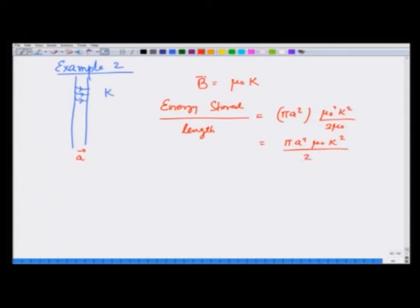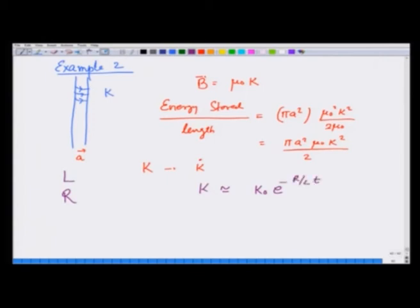Let us now switch off the current k at a rate k̇, so that it slowly goes to zero. If the solenoid has inductance L and resistance R, k decays as k₀e^(−Rt/L). When k is switched off, the magnetic field changes, and by Faraday's law ∇×E = −dB/dt, it produces an electric field that tries to oppose the change — i.e., tries to sustain the field in the same direction.